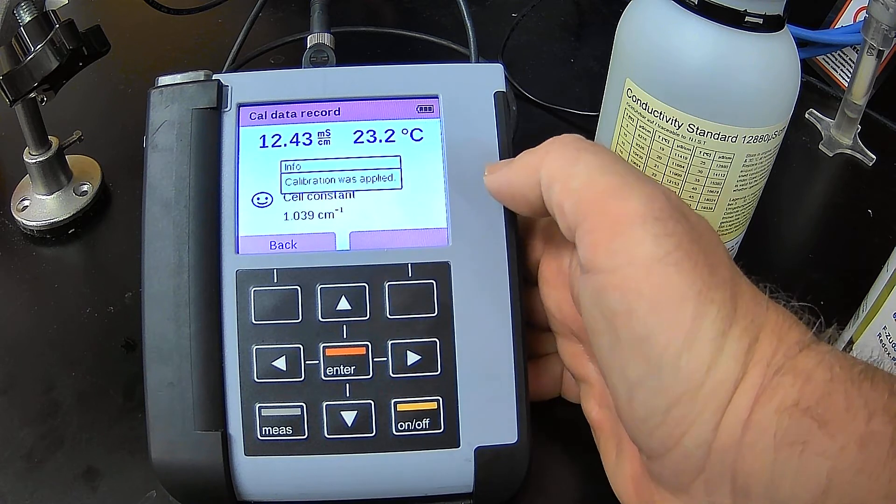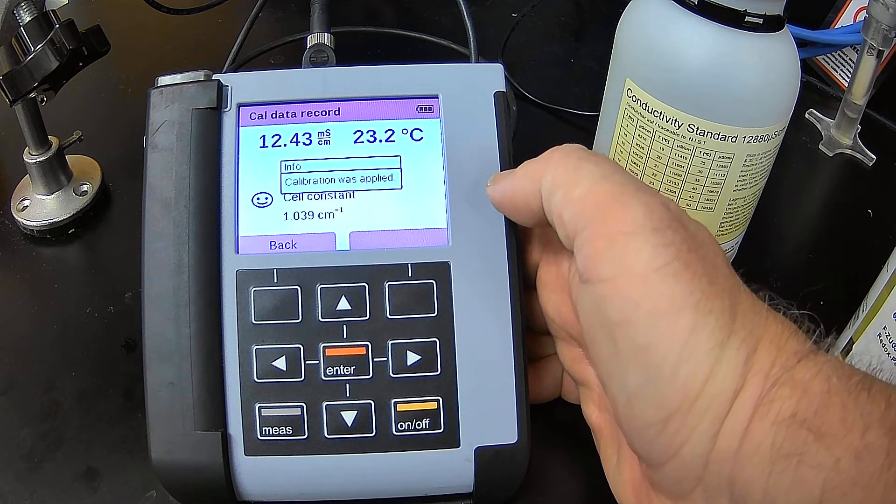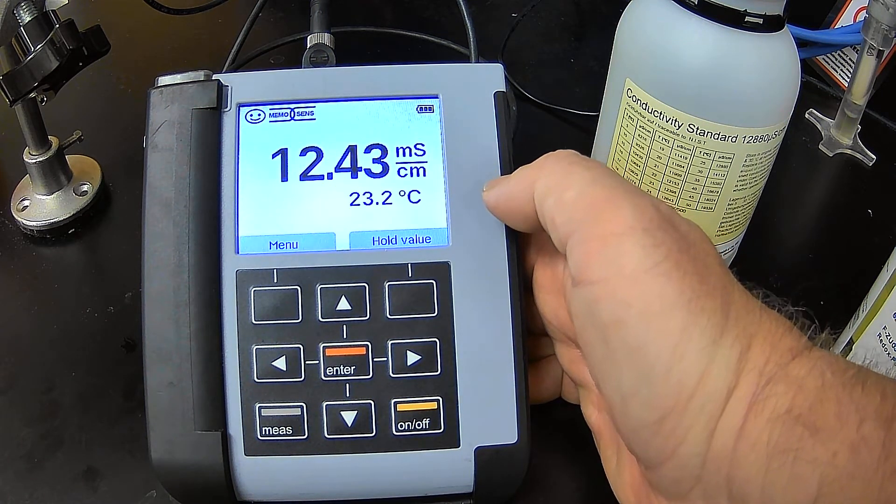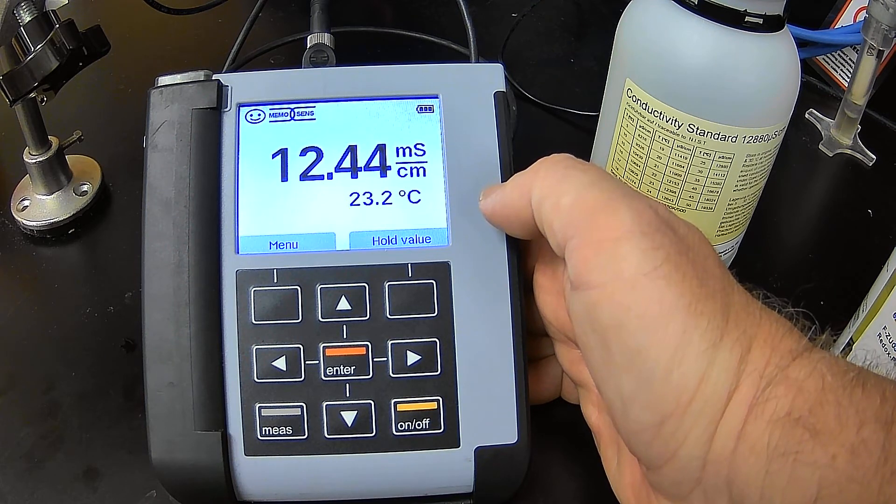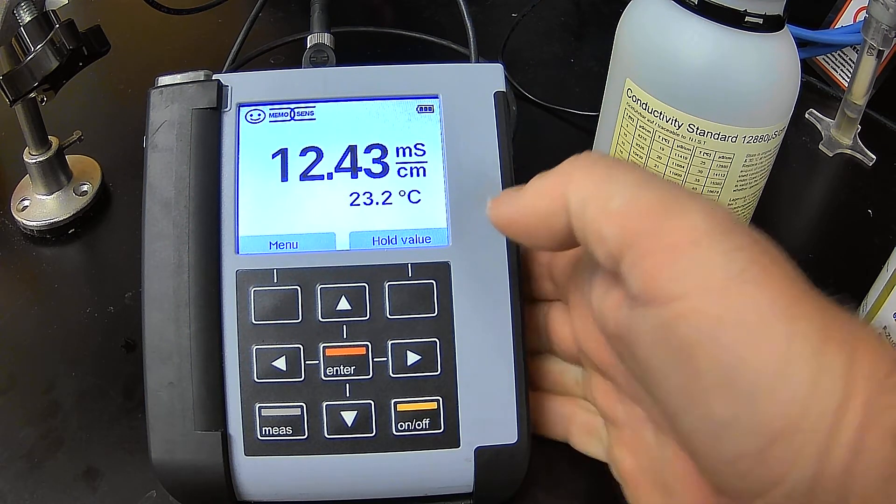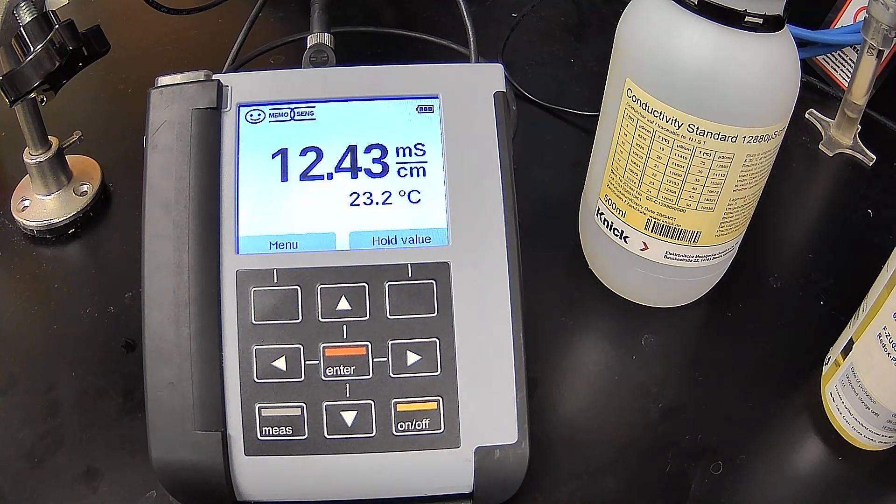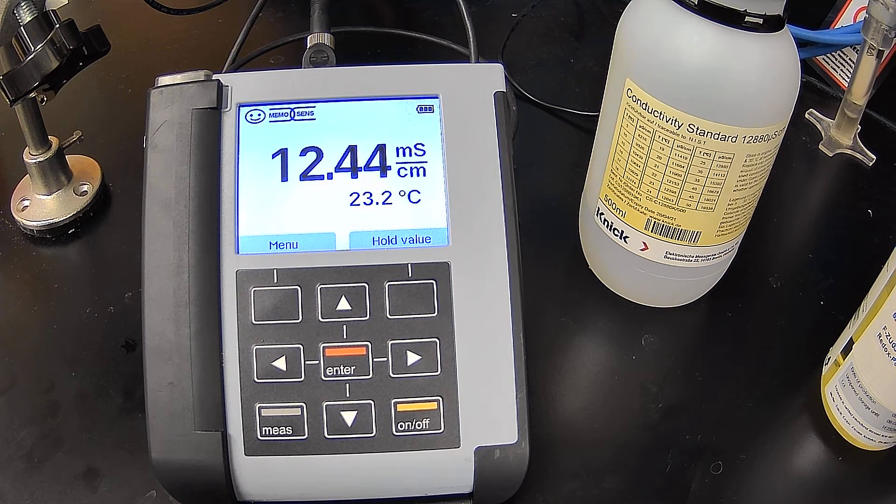So I hit apply. That is it. The probe, or I'm sorry, the electrode is calibrated. The calibration resides in the head of the electrode, in the actual SE615. So if I were to move it to a different portable, that calibration would travel with it.